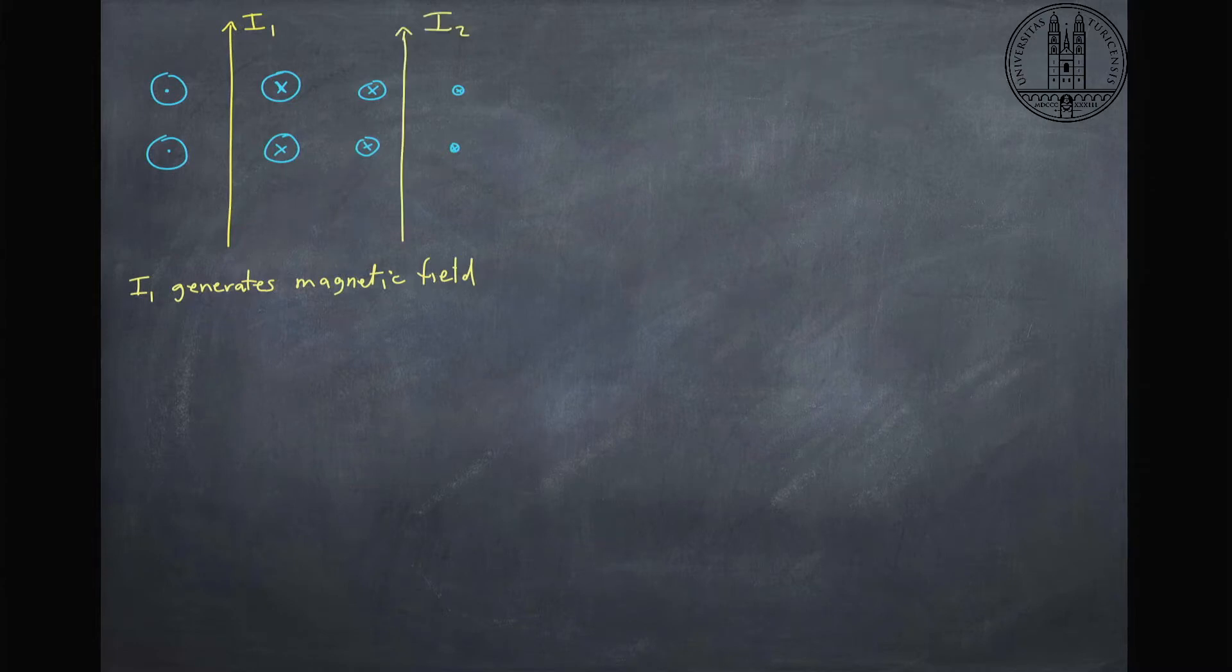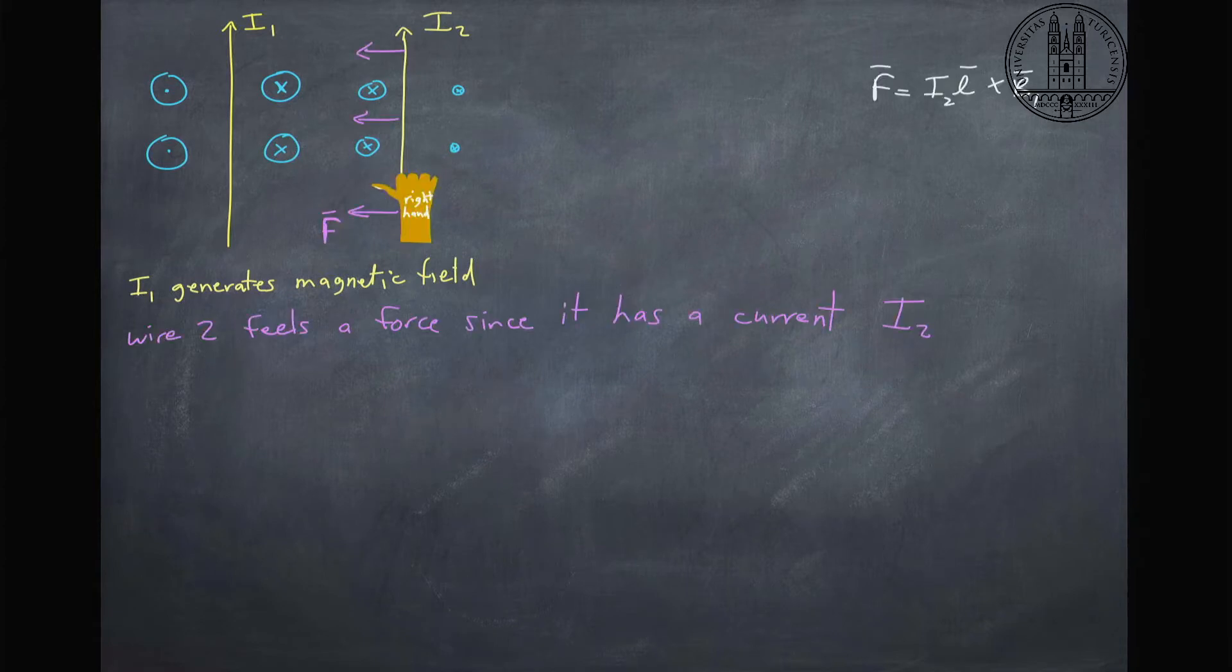If we stick another wire in here, this wire will feel a force because of the magnetic field generated by this other wire. To figure that out, we use our right hand rule again. We put our fingers in the direction of the current, bend them into the direction of the magnetic field, and we see that our thumb is pointing here to the left. So this current moving through I1 generates a force on the other wire I2, and we can see the formula for this here. This is a force of IL cross B.